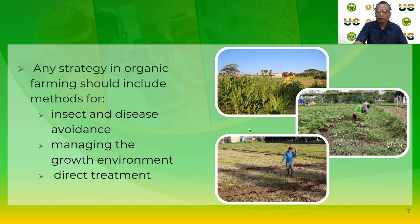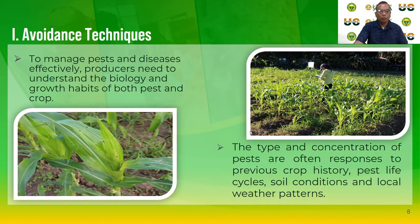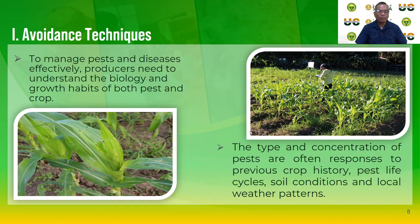Organic ecosystem planning for effective insect and disease management must involve the entire farm operation. You should know the history of the area and use all available information. To manage pests and diseases effectively, producers or farmers need to understand the biology and growth habits of both pests and crops. The type and concentration of pests are often responses to previous crop history, pest life cycles, soil conditions, and local weather patterns.